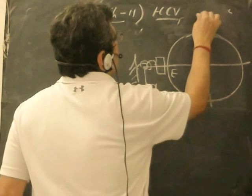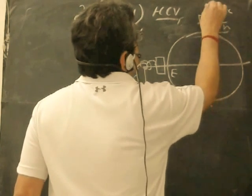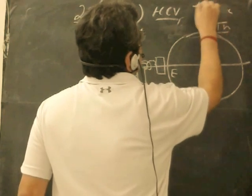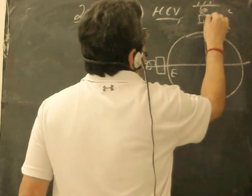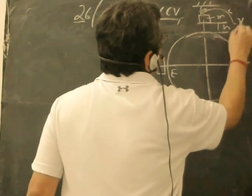We have to find out at what height above the surface of the earth we should place the same system with the same spring and mass so that the extension doesn't change. Extension is again X.